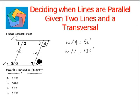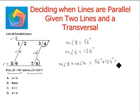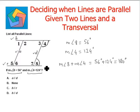So these are the two angles whose measures are given to us. Let's find the total: measure of angle 8 plus measure of angle 4 equals 56 degrees plus 124 degrees, which equals 180 degrees. So the measure of angles 4 and 8 is 180 degrees — we can say that they are supplementary.